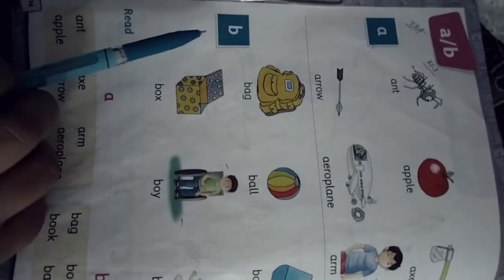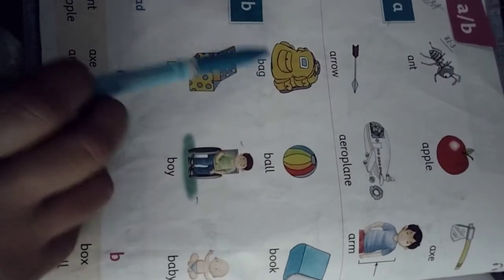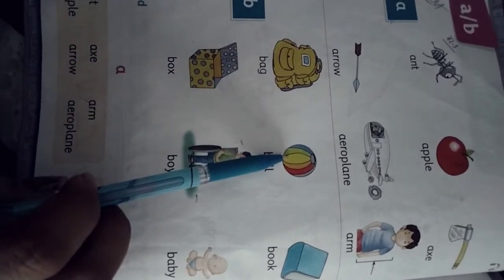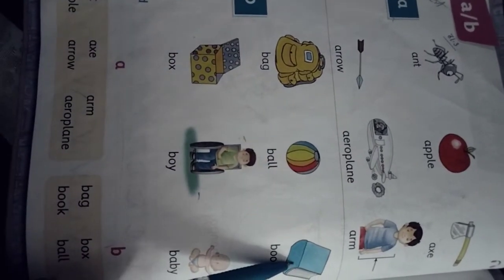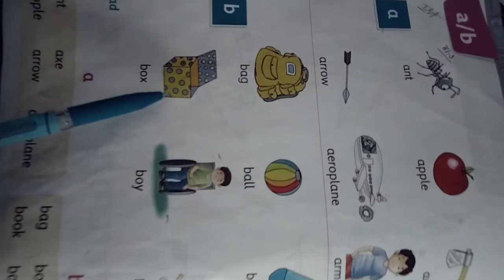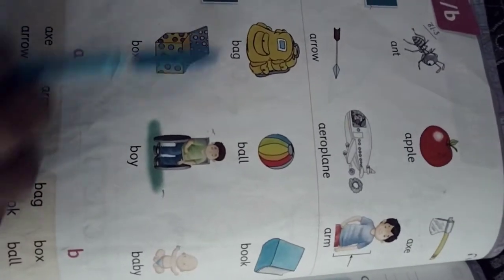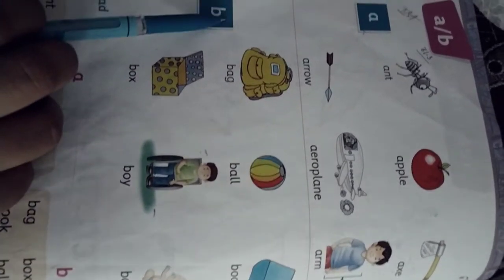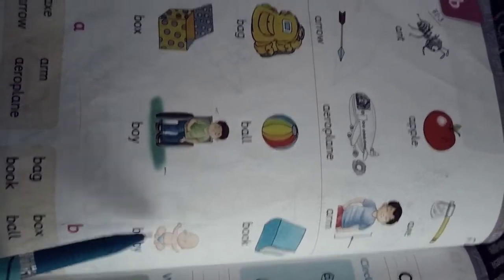Next, after A, B. B for Bag, B for Ball, B for Book, B for Box, B for Boy, B for Baby.